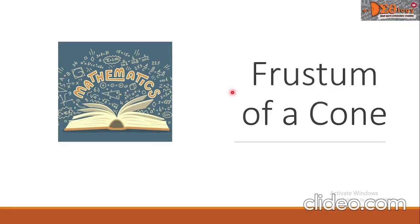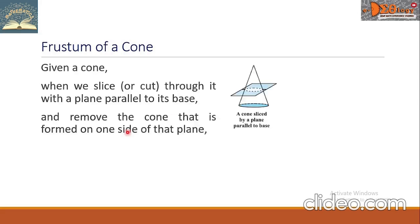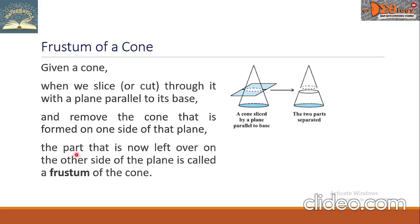Hi everyone. Today we're going to study frustum of a cone. Given a cone, when we slice through it with a plane parallel to its base and remove the smaller cone formed on one side, the part left over on the other side is called a frustum of the cone.